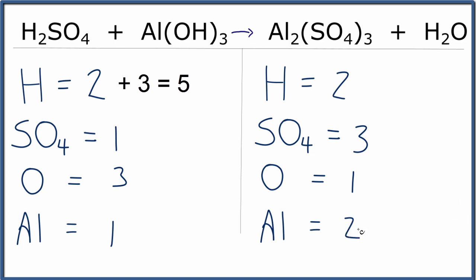Let's start by balancing the aluminums, because I have one here and two here. So I can just put a two in front of the Al(OH)3, and that means that I'll have one times two, two aluminum atoms, and then three times the one, three oxygens, times the two.